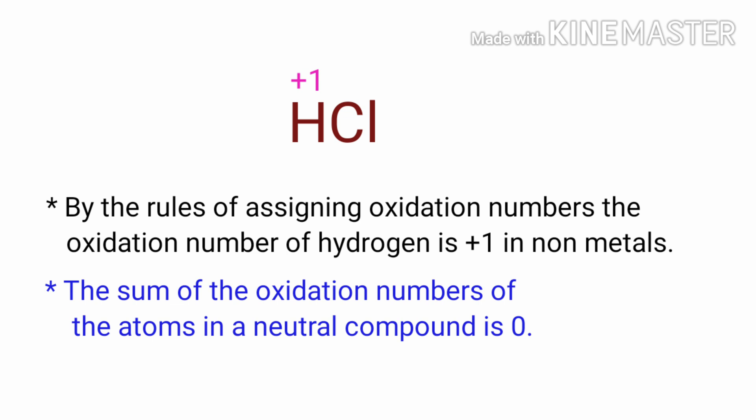As per rule of assigning oxidation numbers, the sum of the oxidation numbers of the atoms in a neutral compound is equal to zero. So to nullify the charge, the oxidation number of Chlorine must be minus one.